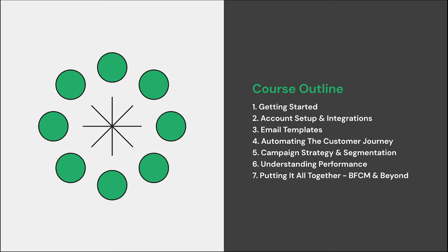We'll move on to the automated customer journey with sign-up forms and flows for lesson four. This is an area where Klaviyo truly shines and shows just how powerful it can be. In lesson five, we'll be tackling campaign strategy and segmentation. Lesson six is on understanding performance with analytics and benchmarks, where we'll touch on how to interpret data to understand the health of your emails and where there are opportunities for growth and improvement. And in our final lesson, we'll be putting it all together and discussing the synergy of everything we've covered in order to have a well-oiled machine for Black Friday and Cyber Monday, let alone the entire calendar year.